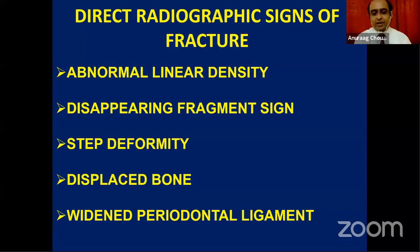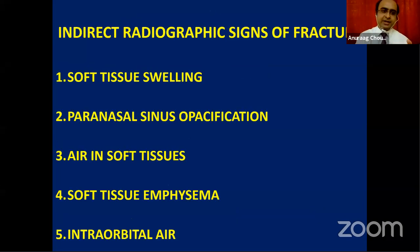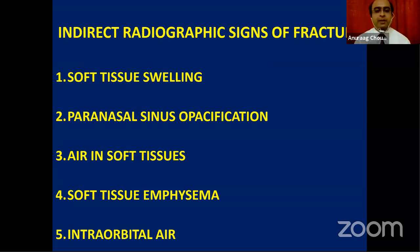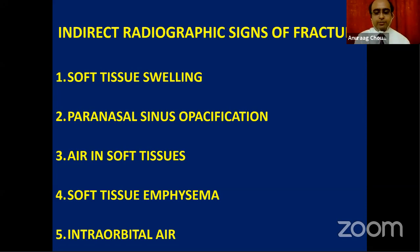The basic direct radiographic signs of fracture include: abnormal linear density, overlapping sign, disappearing fragment, step deformity, discontinuity of bone, displaced bone, and widened ligament space in dental fractures. Indirect radiographic signs include soft tissue impingement, soft tissue encroachment, soft tissue swelling, fluid-filled structures such as paranasal sinus opacification, air in soft tissue — soft tissue emphysema — and intra-orbital air, which is highlighted as opacity within the lucent anatomical structures.